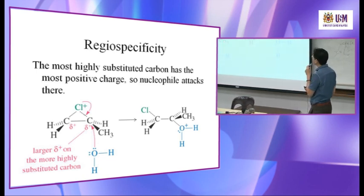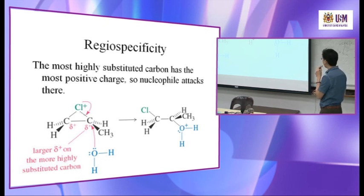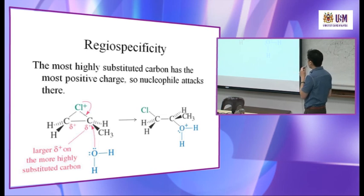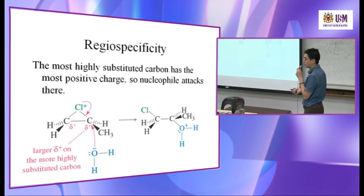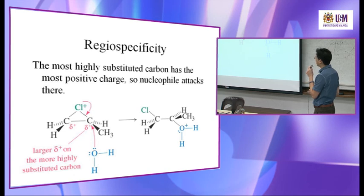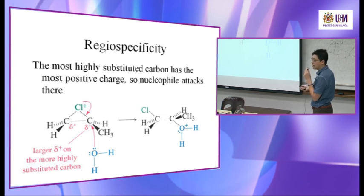The mechanism is shown on the whiteboard. The first step is the same as halogenation — forming the halonium intermediate. Then you decide which carbon is slightly more positive. Because one carbon has an electron-donating R group making it more stable, the nucleophile water attacks that carbon. The arrow should show the bond breaking here — the other way.